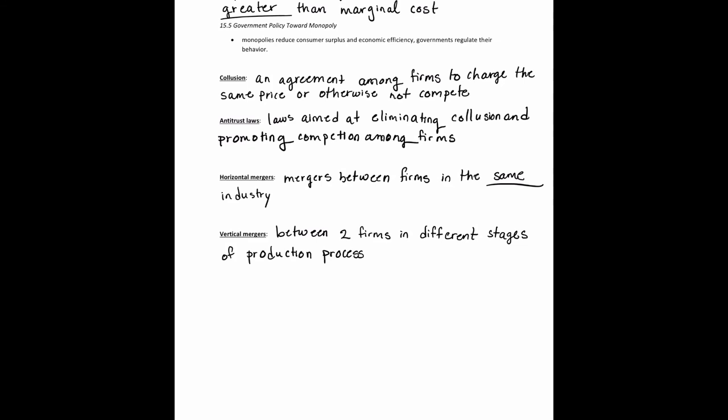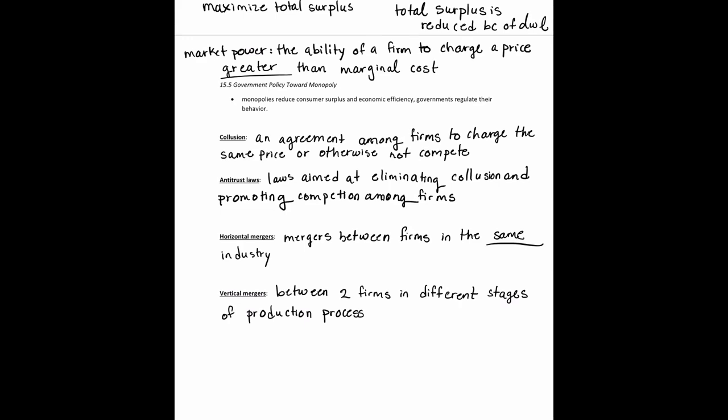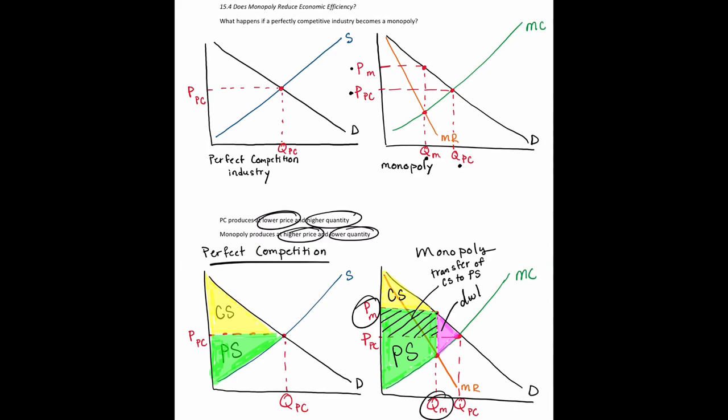There are several ways to measure industry concentration and market share to assess monopoly power. One measure used for monopolies is the Herfindahl-Hirschman Index (HHI), which squares the percentage market share for each firm and adds up the results. A worksheet and answer key for monopolies will be provided. The key takeaway is that the industry demand curve for a monopoly is the same as the individual firm demand curve, since there is only one company in the entire industry.